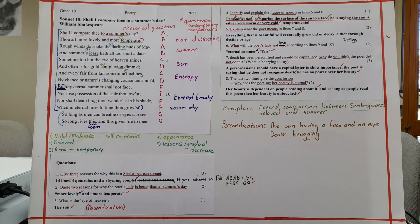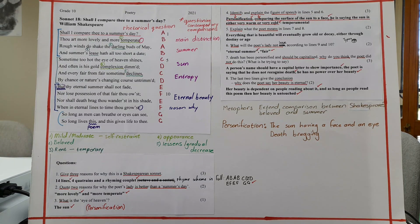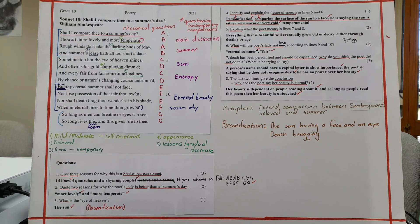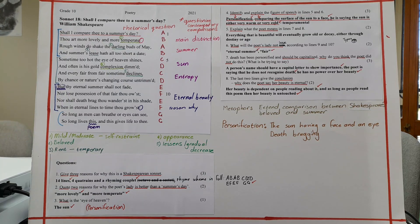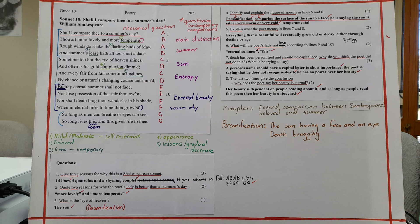Number five, explain what the poet means in lines seven and eight. What will the poet's lady not lose according to lines nine and ten? Death is being personified and should be capitalized. Why do you think the poet did not do this? In other words, what is he trying to say? And the last two lines give the conclusion. Why does the poet say her beauty is eternal?